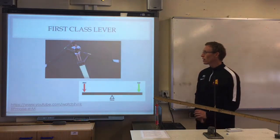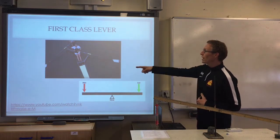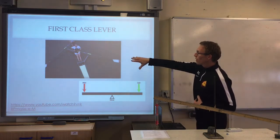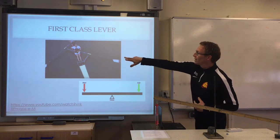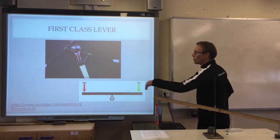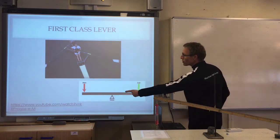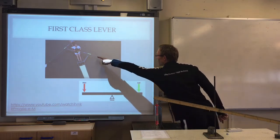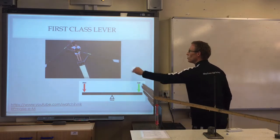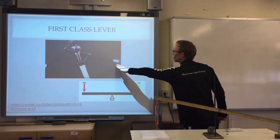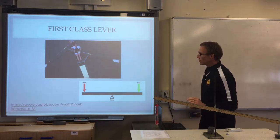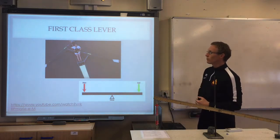A first class lever. I've got a picture of a rower with his oar and the oar is linked to the boat. The rower is our effort, the fulcrum is the part that attaches to the boat, and the load is the water at the end of the oar that is moving. It looks a bit like a seesaw — that is a first class lever.